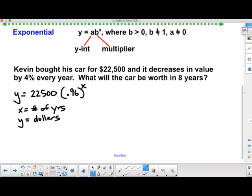So then the question becomes, why is this 0.96? This multiplier here, if the car remained unchanged in value, that multiplier would be one. As long as we take 22,500 and keep multiplying by one over and over again, it will remain unchanged. And as we know, one is equal to 100%.